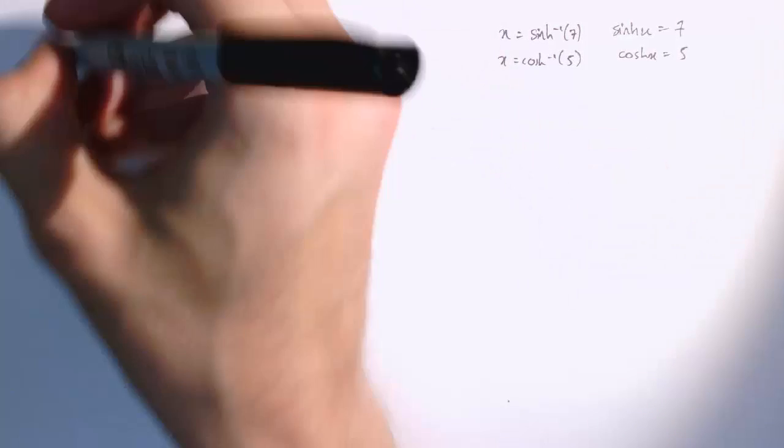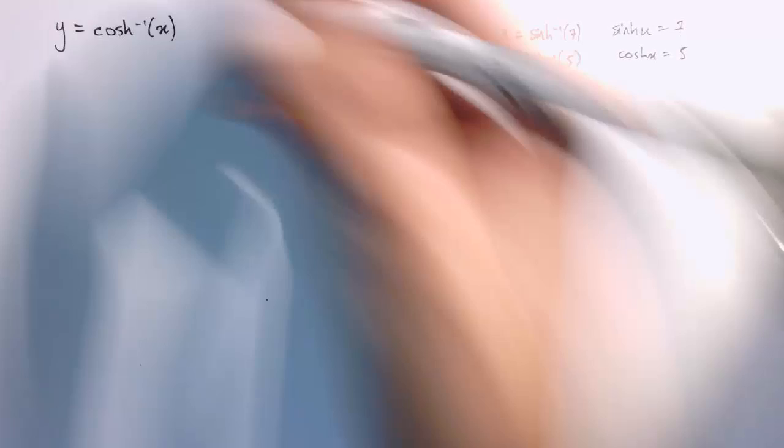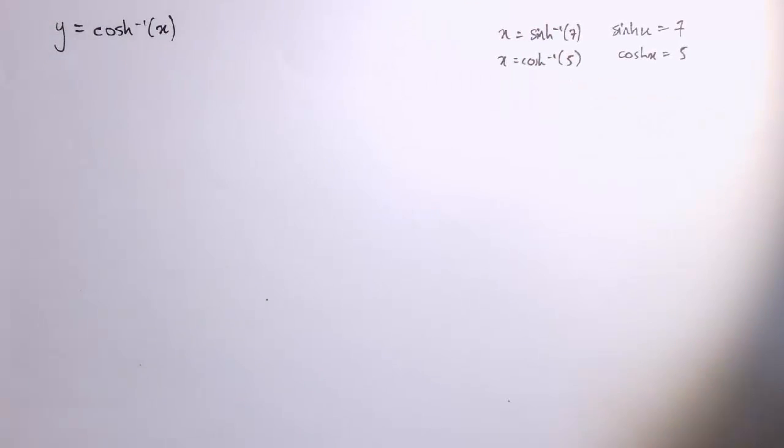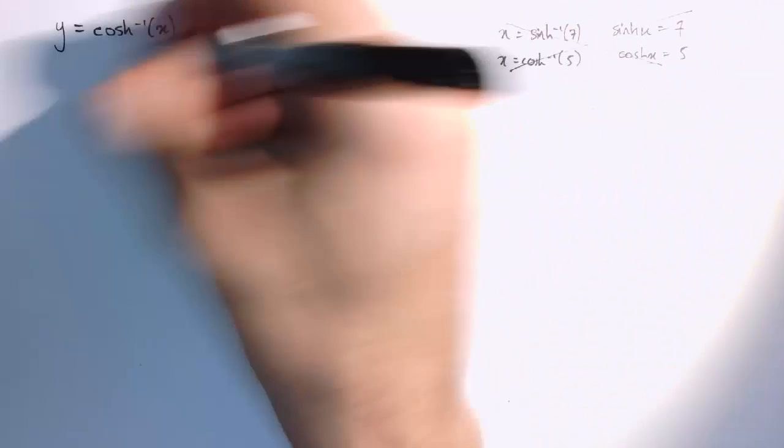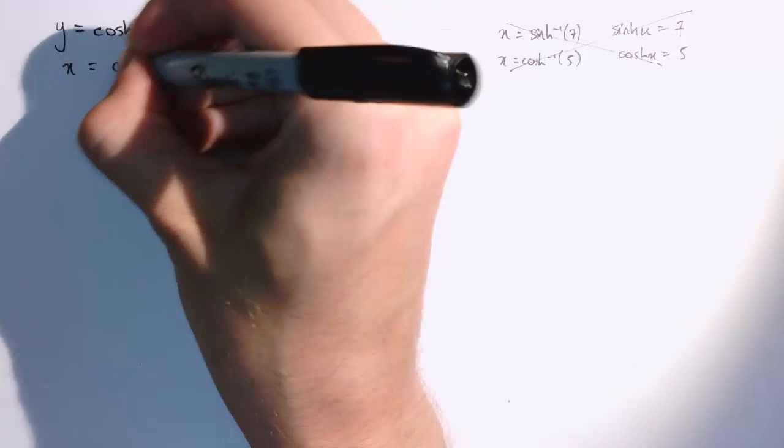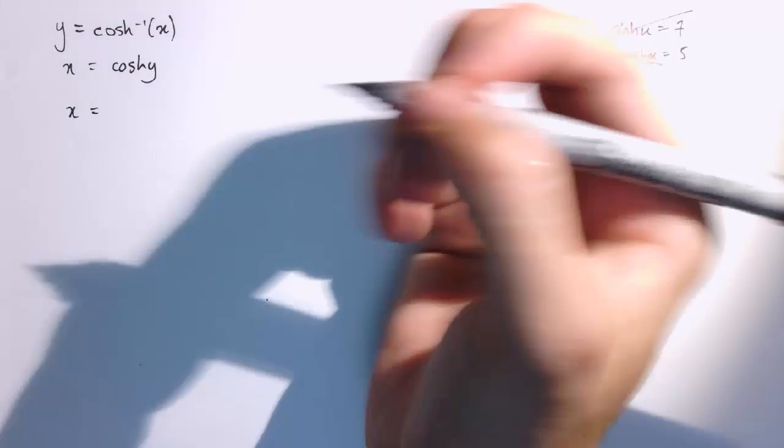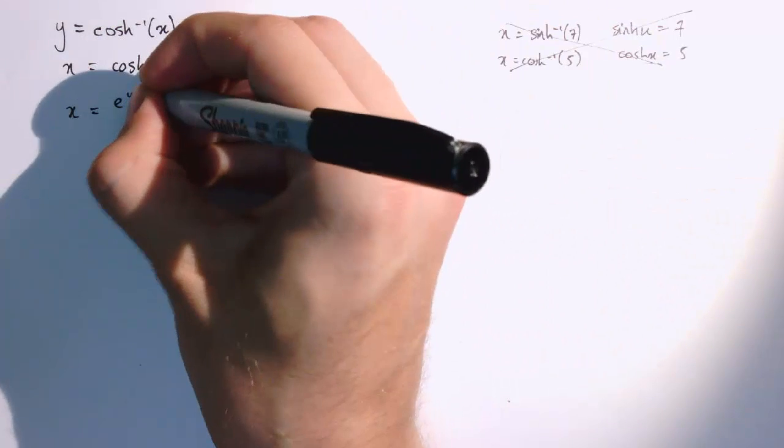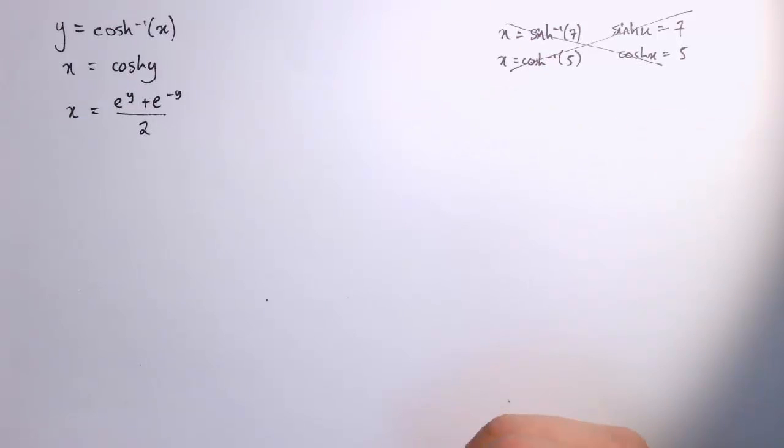So let's think about what a function y equals cosh inverse of x might look like. So we're not worried about those particular examples. Then this would mean that x is equal to cosh y. So x equals e to the y plus e to the minus y divided by 2.